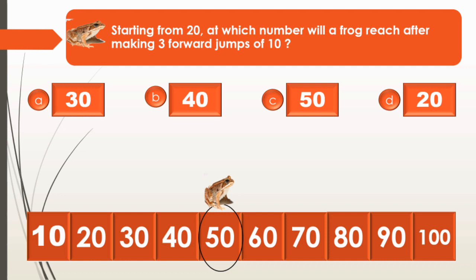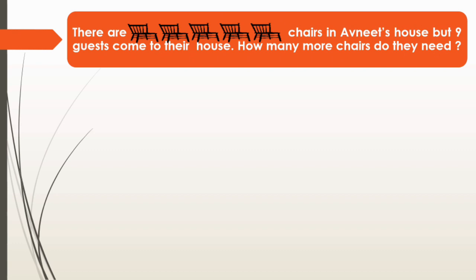Let's put a tick mark at the right option. Option A is 30, Option B is 40, Option C is 50, and Option D is 20. So Option C, 50, is the right answer. We will put a tick mark here.